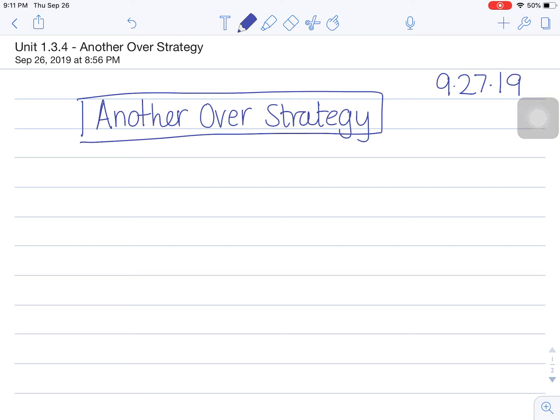The first problem we're going to do today in this over strategy is 21 times 60. We're going to solve this problem and represent it in two different ways. We're going to start by showing an array, and the array is going to help us visualize what it is that we're actually doing during the computation.